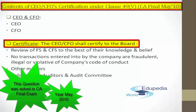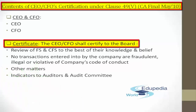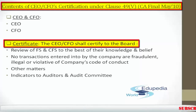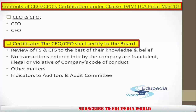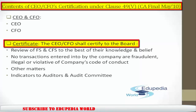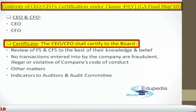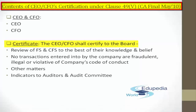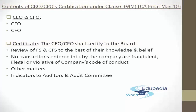This covers the contents of CEO and CFO certification under Clause 49, sub-clause 5 — asked in the CA Final Examination for May 2010. To summarize: it is the responsibility of CEO and CFO to certify to the board that they have reviewed financial statements and cash flow statements; that no transaction entered into is fraudulent, illegal, or violative of the company's code of conduct; to report on internal controls; and to make auditors and the audit committee aware of any fraud and the persons involved.